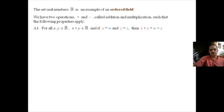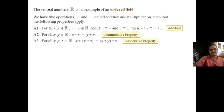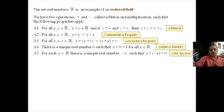The second addition property is that for any x, y in R, x plus y equals y plus x — the commutative property. The third property is that for any x, y, z in R, (x plus y) plus z equals x plus (y plus z) — the associative property. The fourth property is the existence of additive identity: there is a unique real number 0 such that x plus 0 equals x for all x in R. The fifth property is that for each x in R, there is a unique real number minus x such that x plus (minus x) equals 0; minus x is called the additive inverse of x.